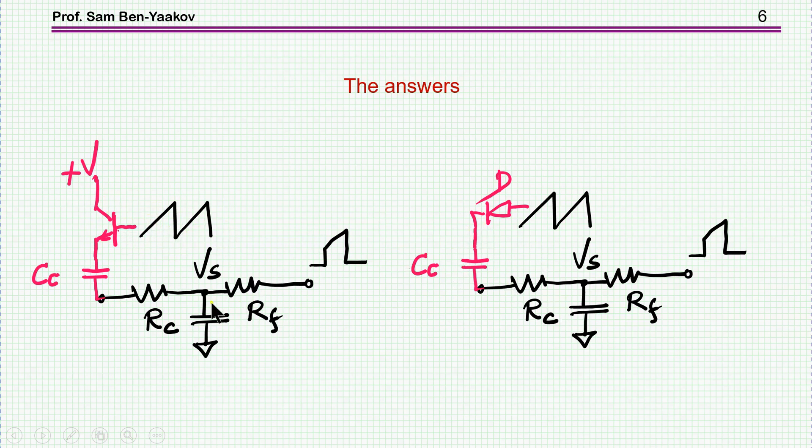But basically it is a peak detector because current can flow only in this direction, cannot flow the other direction. So what happens here is as this triangular waveform develops, there is a current here. Eventually this capacitor will be charged to the peak and that will be the end of it.